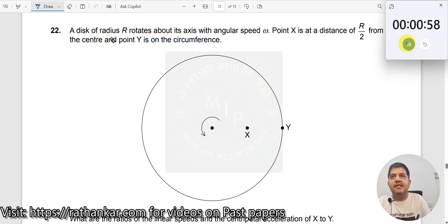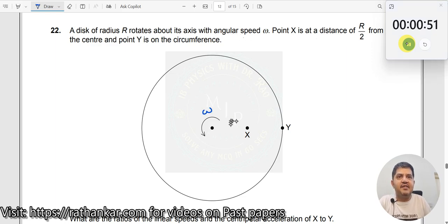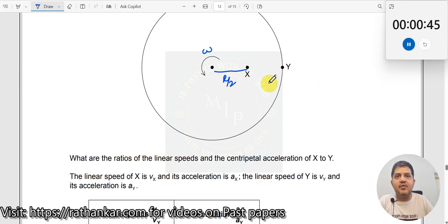Question number 22. A disk of radius r rotates about its axis with angular speed omega. Point X is at a distance of r/2 from the center, and point Y is on the circumference at distance r.